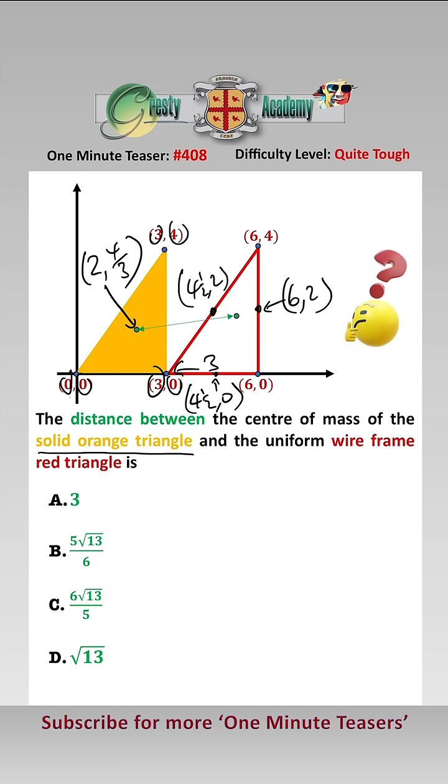Now we need to find the lengths of them. Well, that one is length 3 by inspection. That one is length 4 by inspection. So this one here is length 5 by Pythagoras.